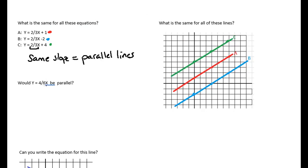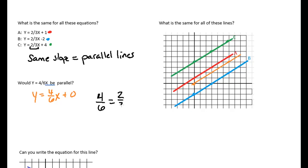What about y equals four-sixths x? It has no written y-intercept, but that just means it's zero — it's plus zero, so we start at the origin (0, 0). We go up four and over six. Connecting those two points, it looks parallel to the other lines. And it is — four-sixths reduces to two-thirds, so it is the same slope and parallel to the other lines.